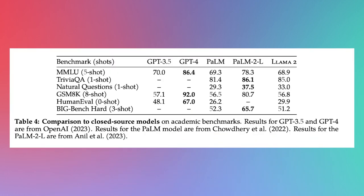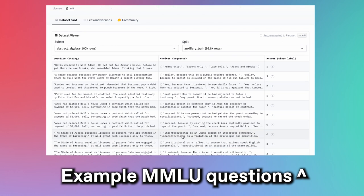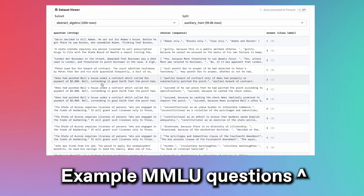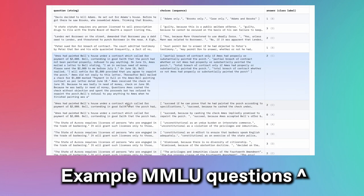Llama 2 doesn't get first place on any of the given benchmarks against closed-source models. For example, PaLM 2 Large is best at trivia, defeating Llama 2 by 1.1 points, and GPT-4 beats Llama 2 on the MMLU benchmark — which tests history, math, computer science, and more. It's basically the SAT of AI.